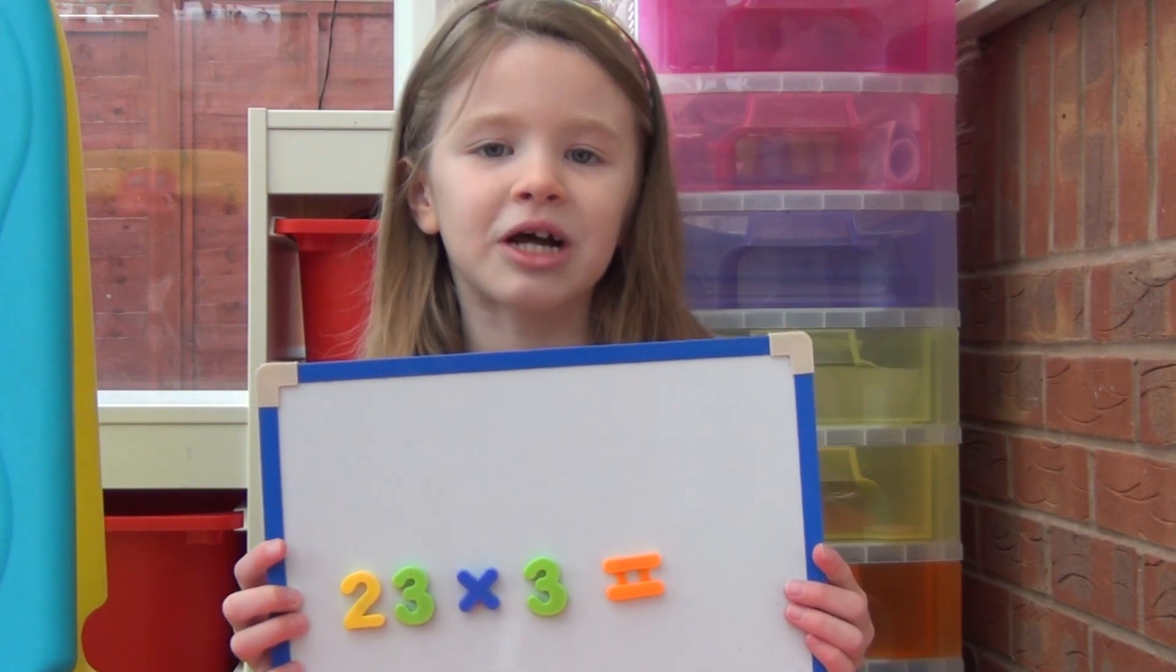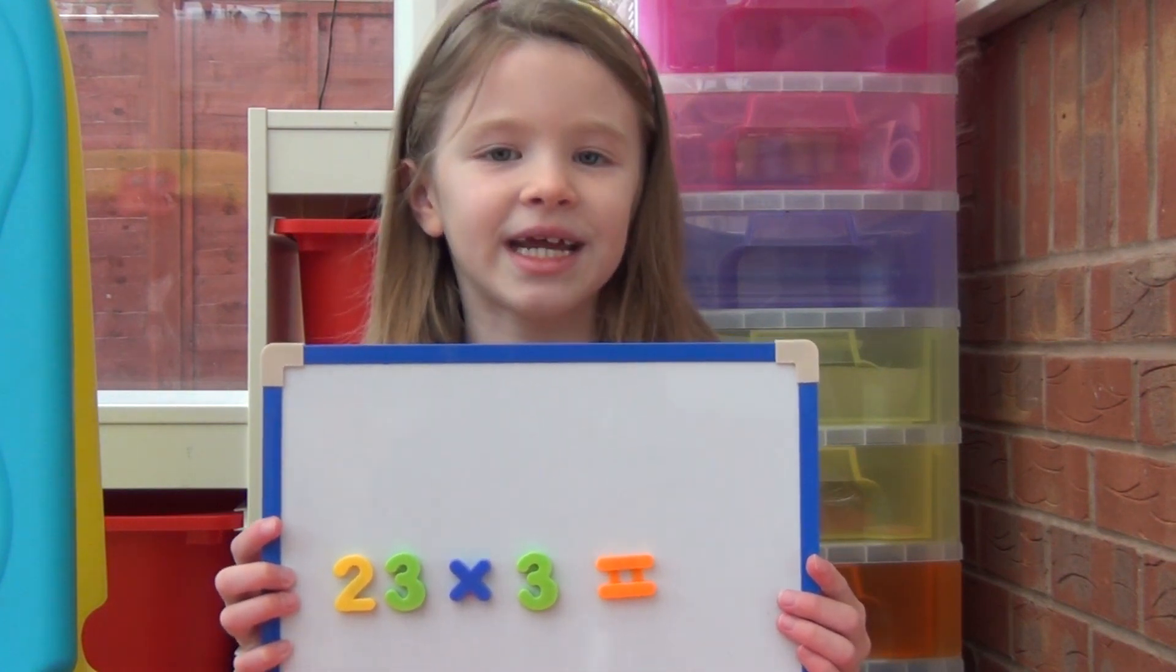I'm going to start by working out 23 times 3. I've drawn a grid and have partitioned the 23 into 10s and 1s, so we now have 20 and 3.